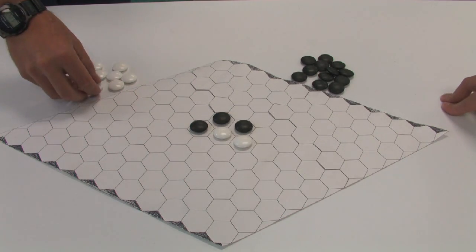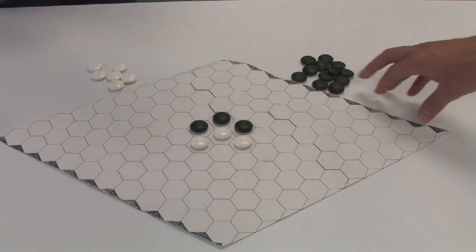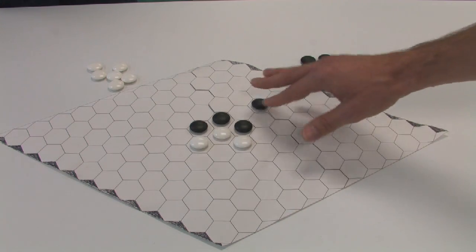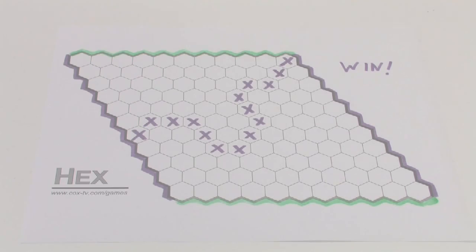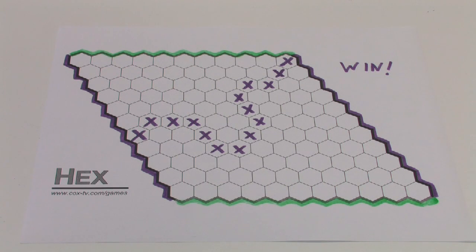The goal is to build a bridge across the board, which I'll show you now. Here for instance is a win for purple. The purple X's make a complete chain, a path of touching hexagonal cells from one edge of the board to the opposite.